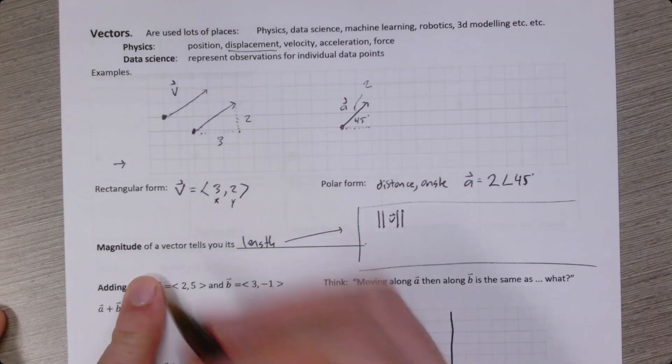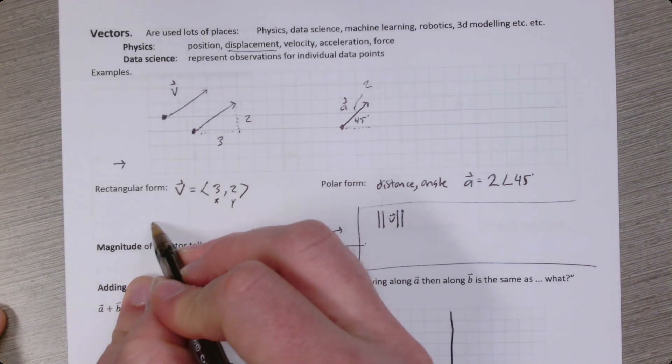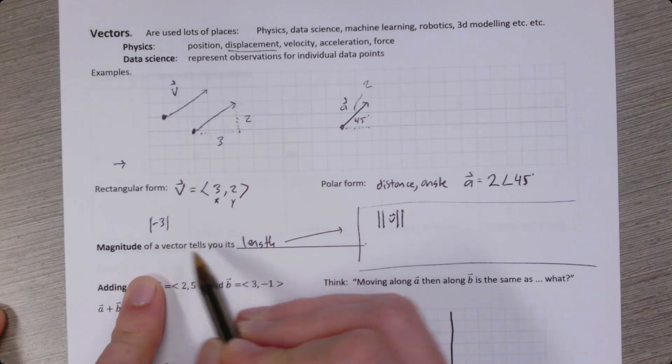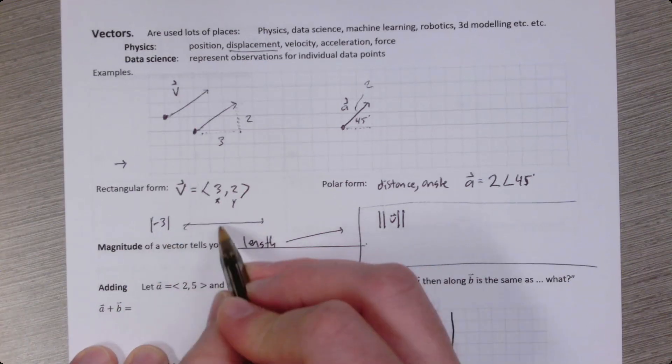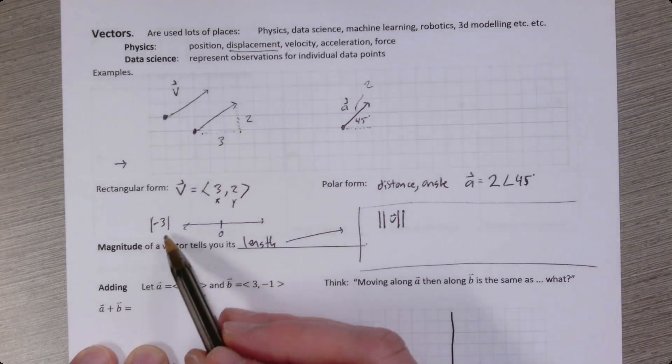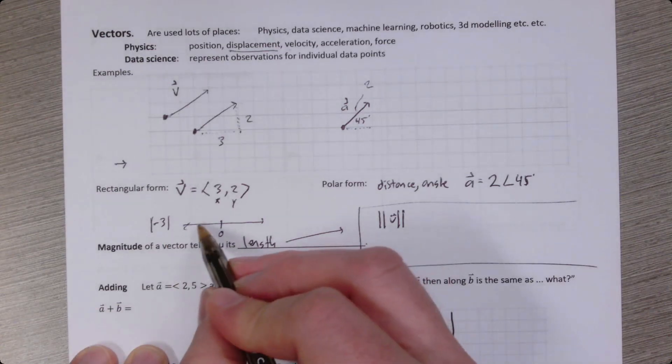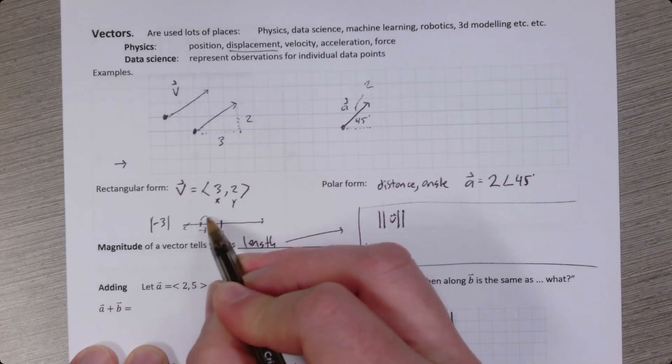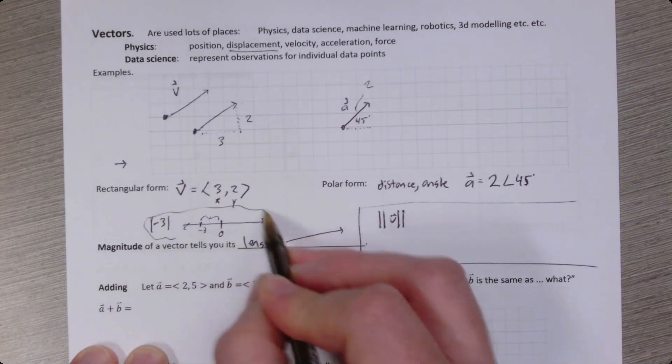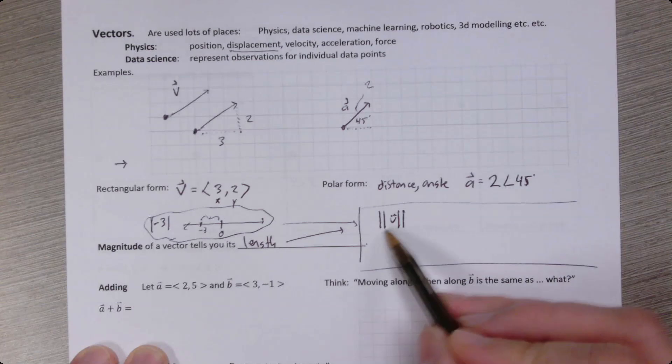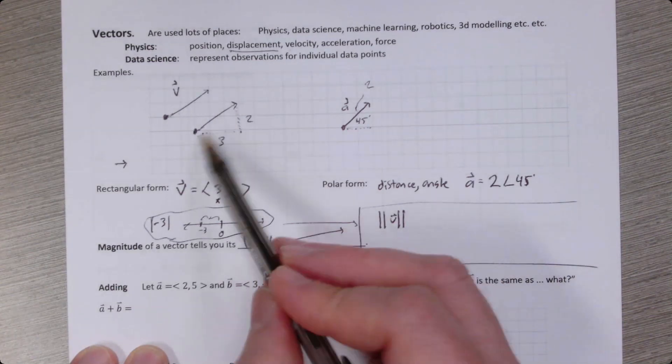I think a lot of students think about absolute value as it turns a number positive. But really, I think a better way to think about absolute value is it tells you a distance from zero. So negative three here is telling you that this distance from zero is three. So same thing, this is telling you a distance. It's telling you like the difference between those two values.